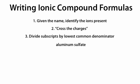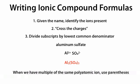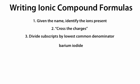Aluminum sulfate: Al3+ and SO42-. Cross the charges to get Al2(SO4)3. When we have multiple of the same polyatomic ion, we put parentheses around that whole polyatomic ion to indicate we have multiple. In this case we have 3 SO4, so we put parentheses around SO4 and add a 3 at the end. Finally, barium iodide: Ba2+ and I-, cross the charges to get BaI2.